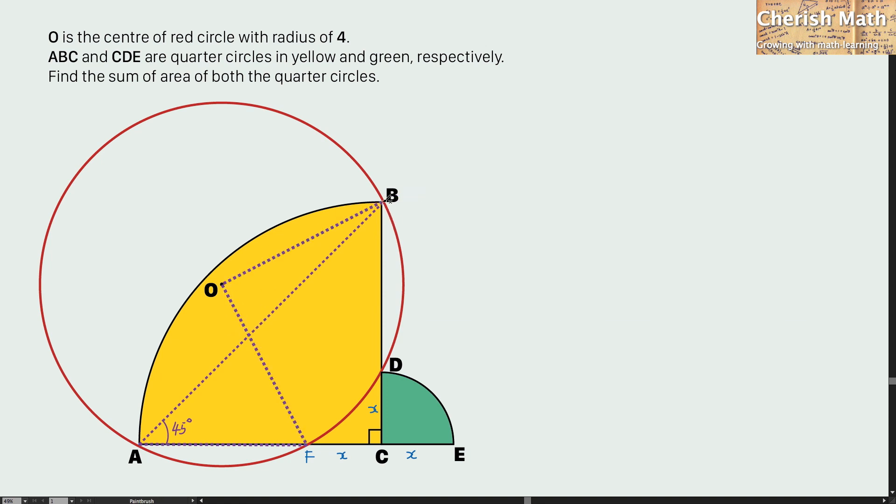The angle subtended from the arc BF reaching at point A is 45 degrees and at the same time for the same arc BF is subtended to the center of the red circle at O and this part is measuring exactly twice the angle at A. That would be 90 degrees.